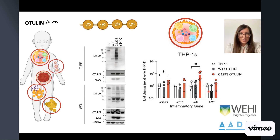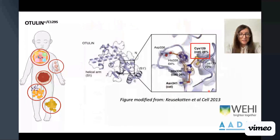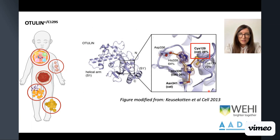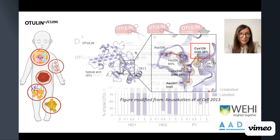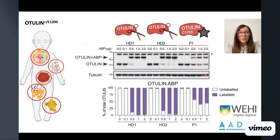So how is C129S otulin actively driving disease? This change from a cysteine to a serine doesn't affect protein stability, but it does entirely ablate otulin's deubiquitinase activity. We found that in patient cells, about 50% of otulin was inactive.